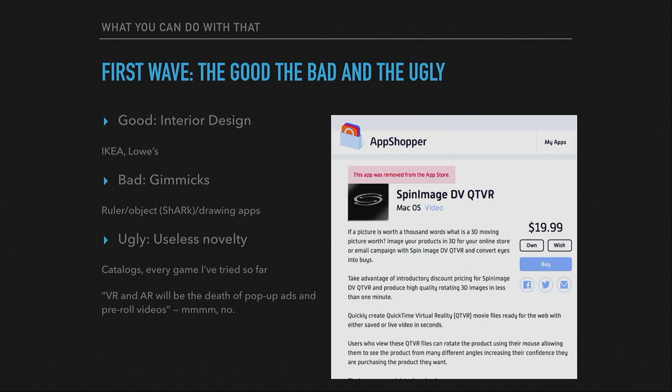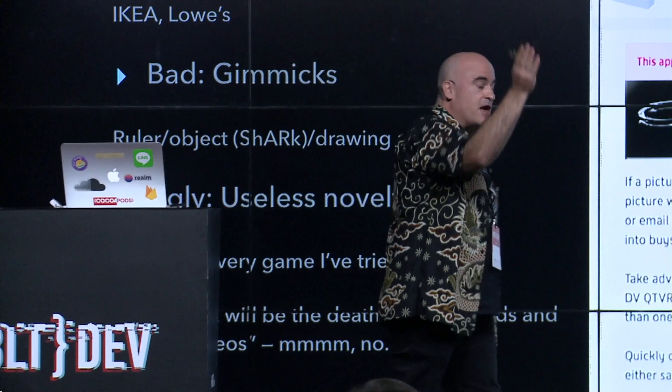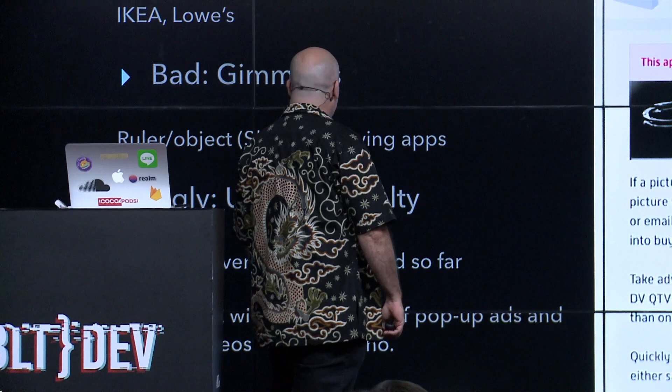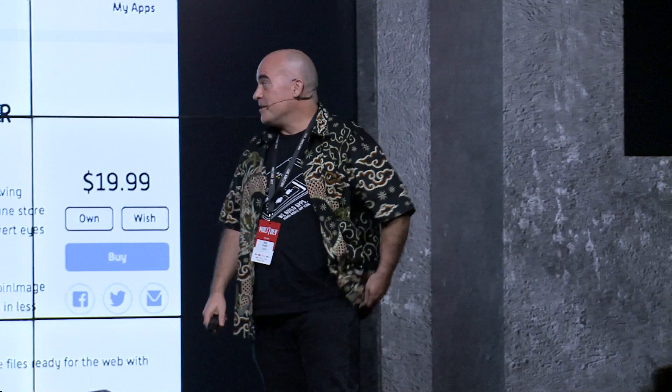However, the only thing that's really useful for is furniture. Then you have the bad apps — the gimmicks: ruler apps that sort of work but not really, object apps like Shark where it swims around and 30 seconds later there's still a shark in the room, and drawing apps where you wave your hand and make a 3D object — that's fun for a minute or two. Then there are the ugly apps, which I call 'useless novelty' — catalog apps, AR games where nothing makes it better except draining your battery.